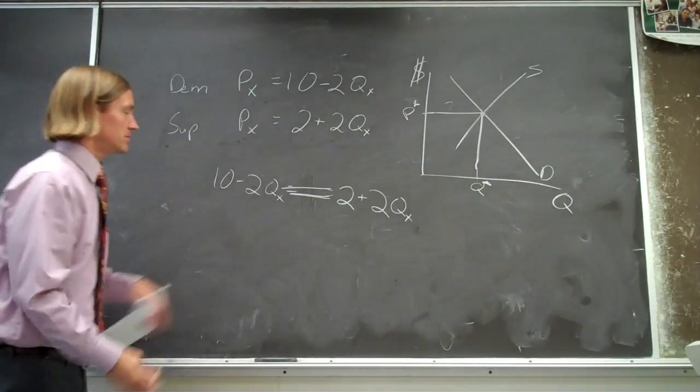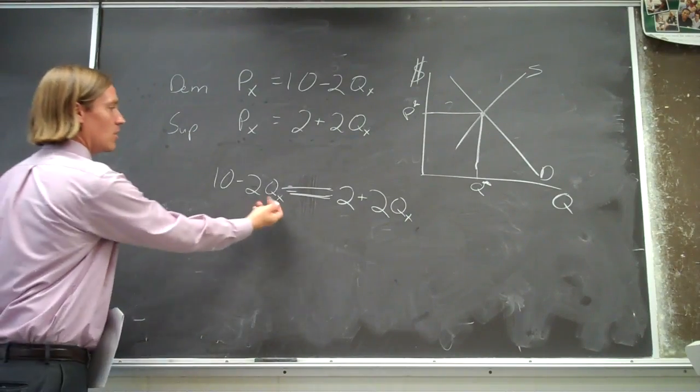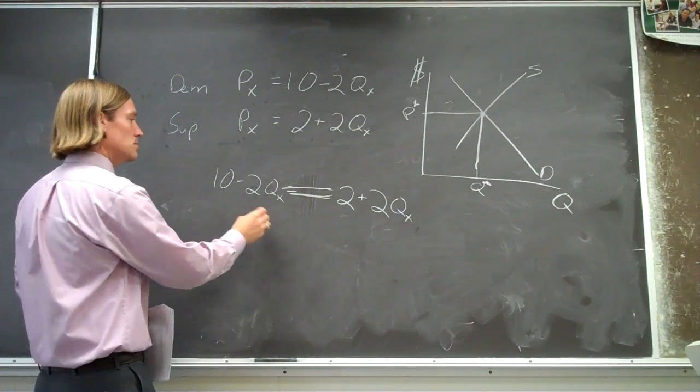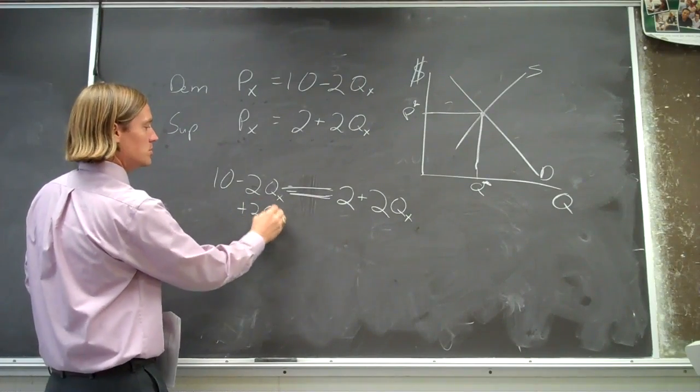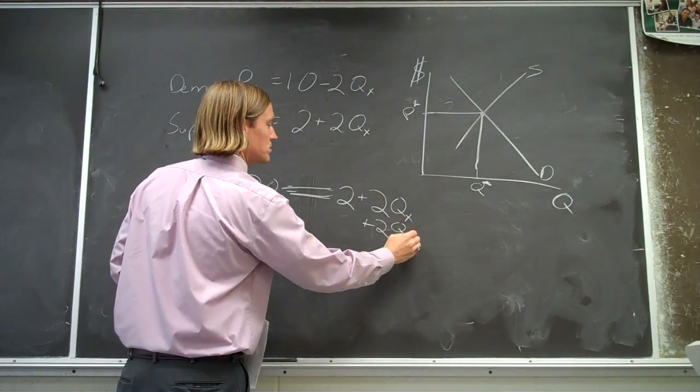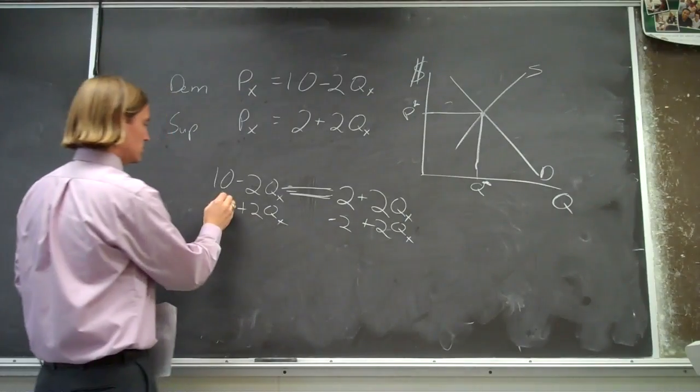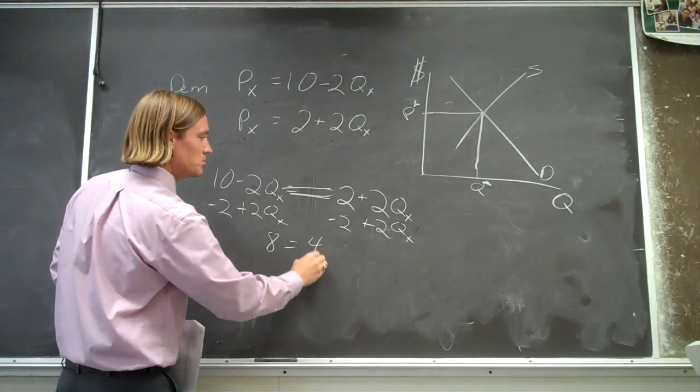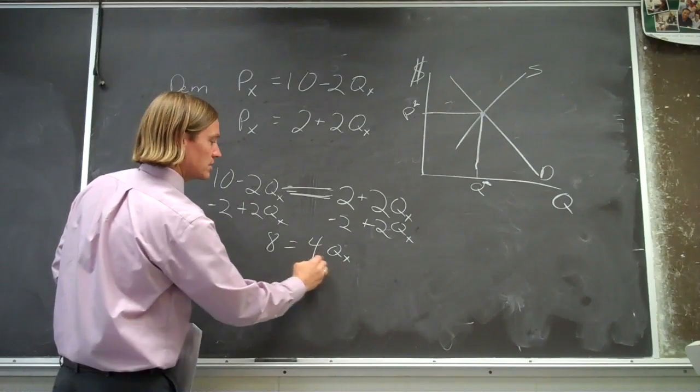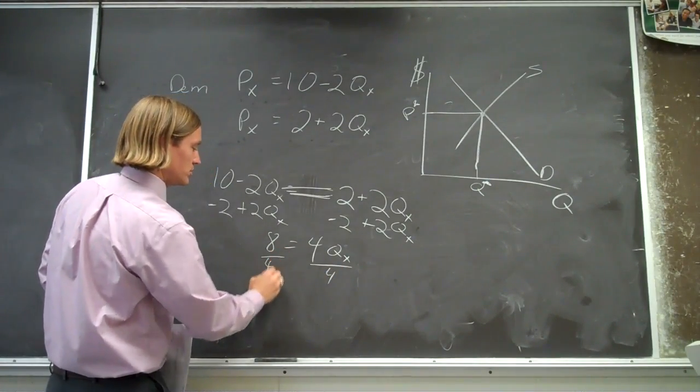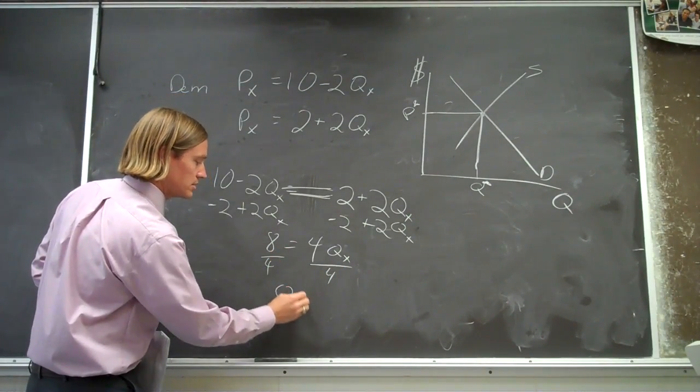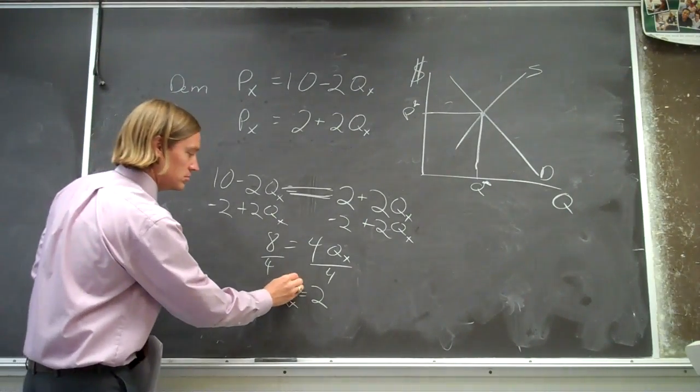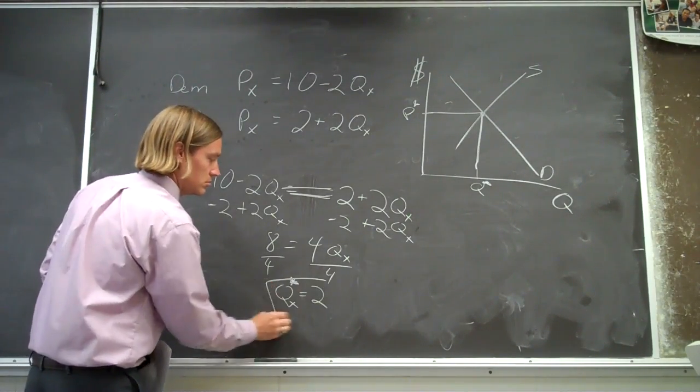So now that they're equal, we can solve for qx. So going old school in algebra, I'm going to add 2qx, add 2qx, subtract 2, subtract 2, got 8 is equal to 4qx, divide both sides by 4, so qx is equal to 2. So that's our equilibrium quantity, right?